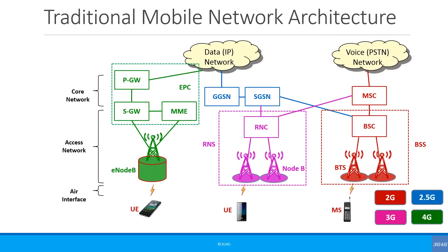We have looked at this diagram in quite a few tutorials before. Simply put, we have two parts in a network: the core network and the access network. The transport network engineers may note that transport is also very important, but for this tutorial we will stick with core and access. Here we are representing 2G, 3G and 4G networks to highlight the same concept that applies to all generations of technology, including 5G.